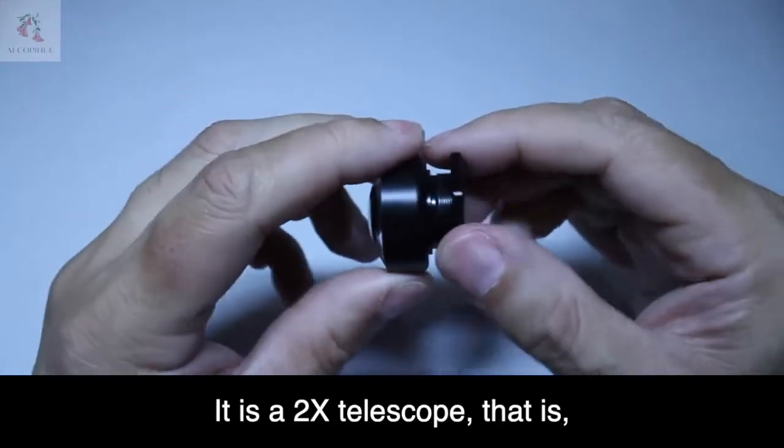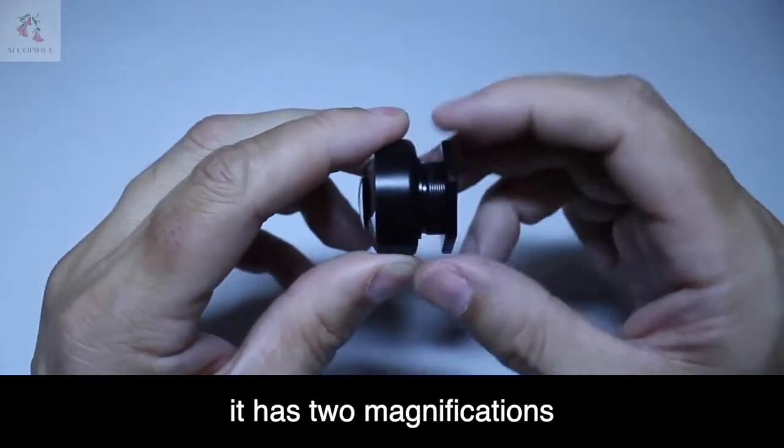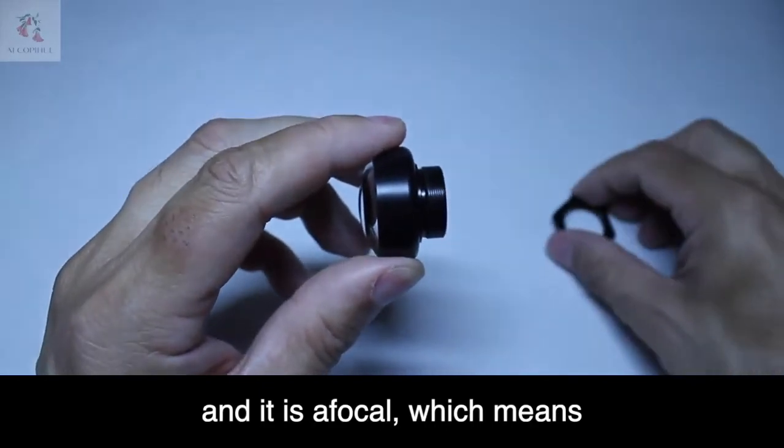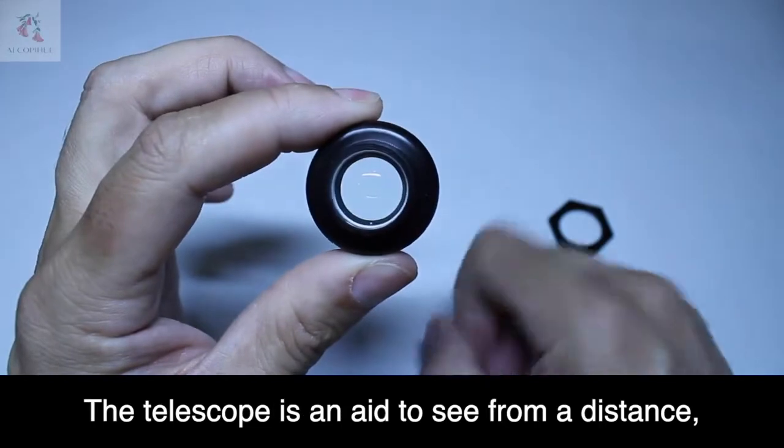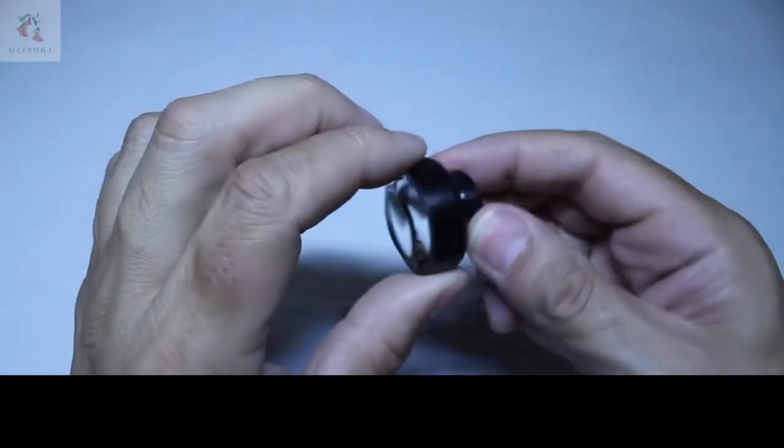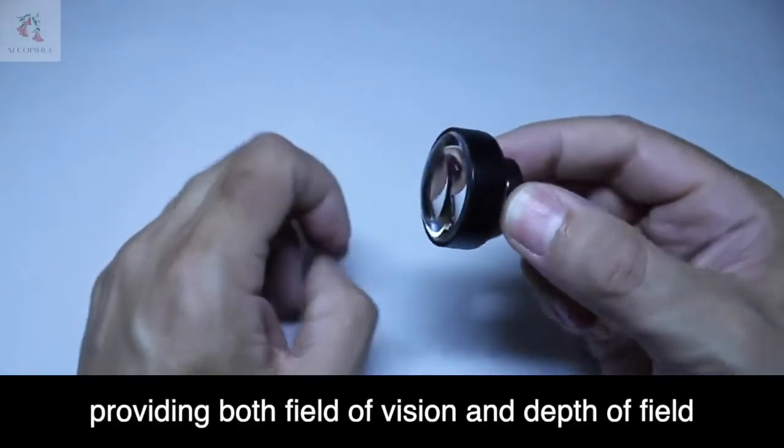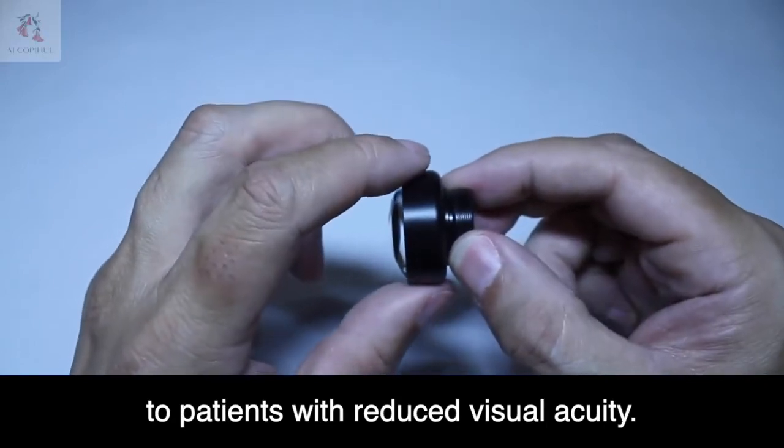It is a 2X telescope with two magnifications, and it is afocal, which means that it has zero diopters. The telescope is an aid to see from a distance, providing both field of vision and depth of field to patients with reduced visual acuity.